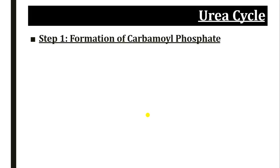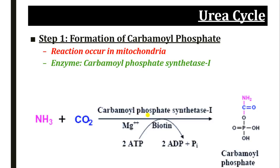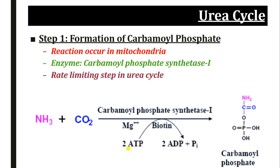The first step of the urea cycle is the formation of carbamoyl phosphate, and this reaction occurs in the mitochondria with the help of the enzyme carbamoyl phosphate synthetase 1. It converts carbon dioxide and ammonia into carbamoyl phosphate in the presence of energy. Carbamoyl phosphate synthetase 1 is the rate-limiting enzyme of this pathway and utilizes two ATP molecules. It requires magnesium as a cofactor, and in this reaction two high-energy phosphate bonds are utilized.